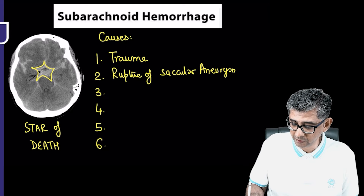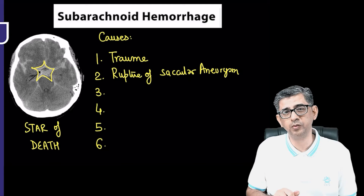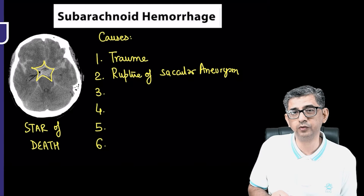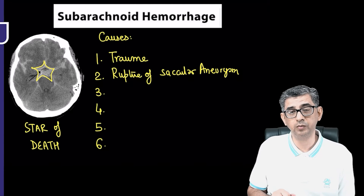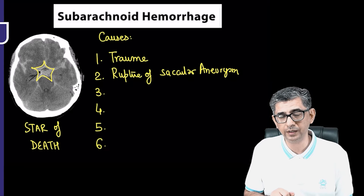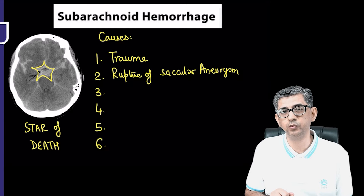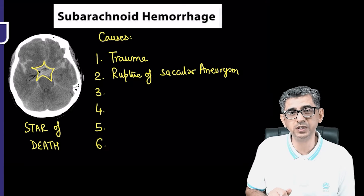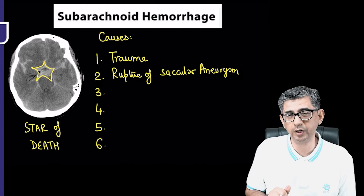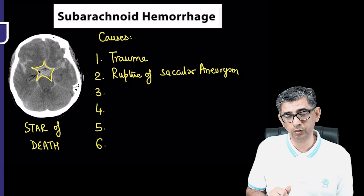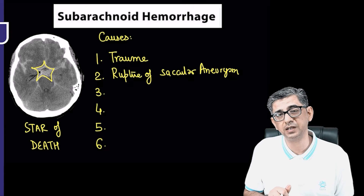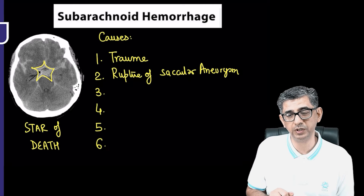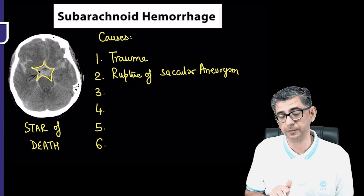In the later part of the discussion, I'll talk about giant berry aneurysm or saccular aneurysm — specifically, what are the determinants that decide the chances of rupture. Obviously one important determinant would be size, but we'll also look at some statistical data regarding what the chances of rupture would be at a particular size.